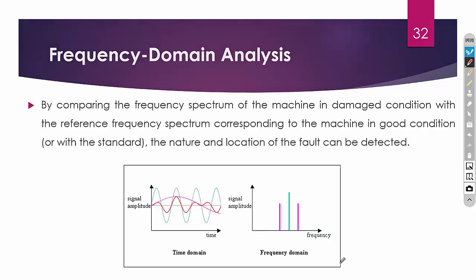To overcome this drawback of time domain analysis, frequency domain analysis is used. In frequency domain analysis, the signal is converted from time domain to frequency domain using the Fast Fourier Transform (FFT). In general, people use MATLAB for analyzing vibration signals — you can import the time domain signal and use the built-in FFT function, which is a predefined one-line transform, to easily convert the signal into the frequency domain.